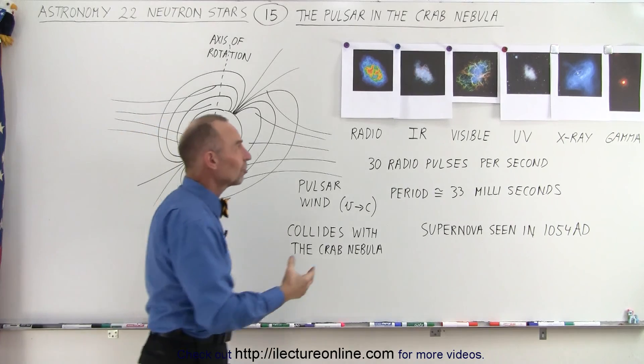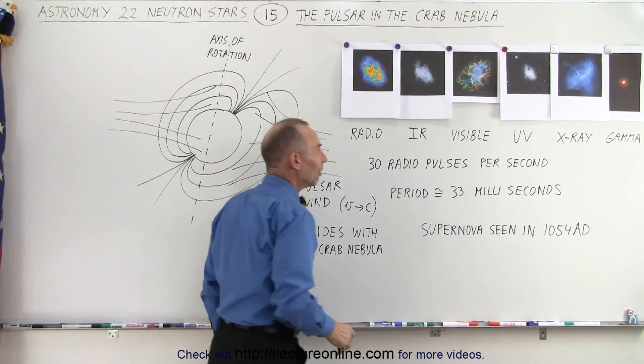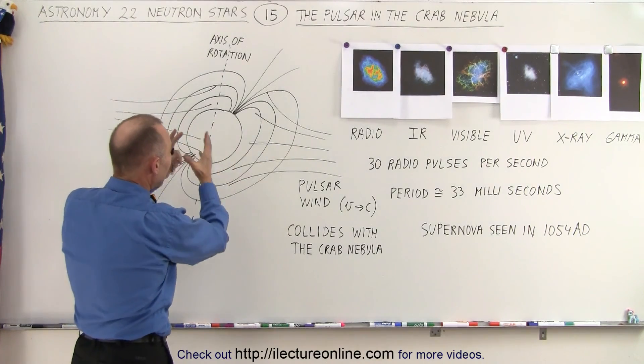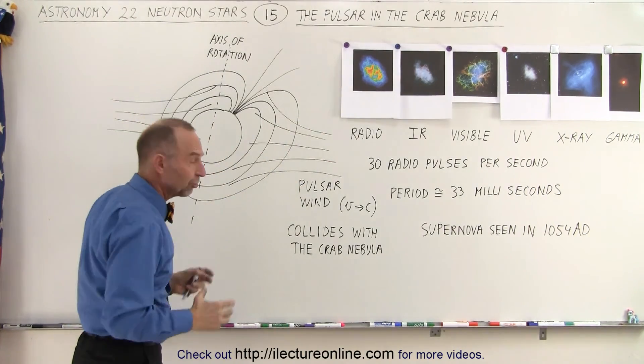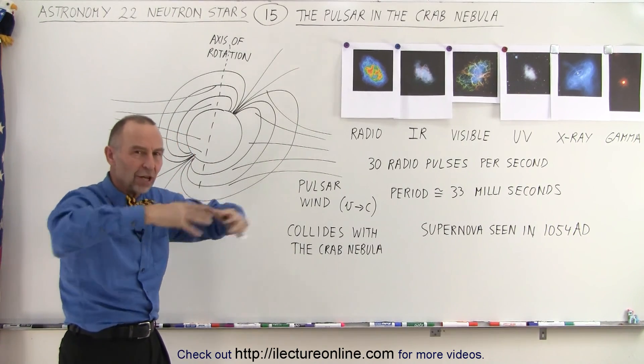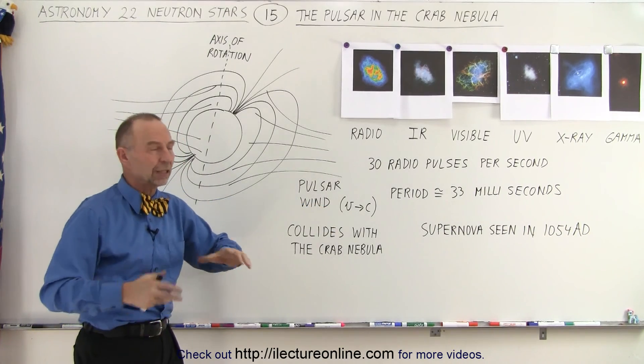Well it turns out that there's a lot of energy that comes from the pulsar that's right in the middle of that nebula. All that energy causes what we call a pulsar wind. The pulsar wind is kind of like the solar wind where many particles are being shot out at very high velocities, in this case at velocities close to the speed of light.